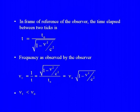Since V is always less than C, the velocity of the observer is always going to be less than the velocity of light. So nu-T, the frequency as measured by the observer, will always be less than the proper frequency nu-0. That is the frequency that will be measured by an observer who is moving transversely to the source of light.